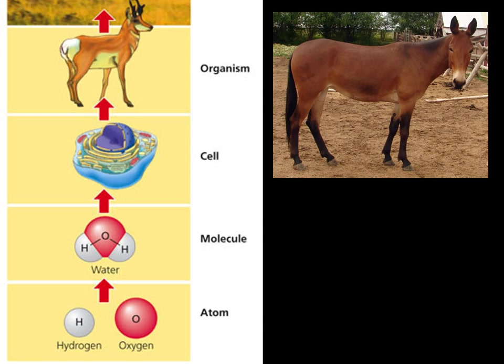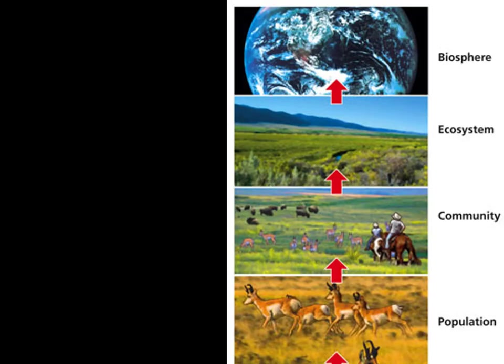Ecology is the study of groups of species and how they interact with each other and the non-living parts of the environment. Once you get past the level of organisms, there are a couple other terms we need to pick up. If we put several organisms of the same species together in a defined area, that's a population. Populations of different species interacting together in the same area form a community. Add in the non-living parts of the environment, like water and soil, and it's an ecosystem. Put all the ecosystems together and every part of the Earth that contains life, and it's the biosphere.